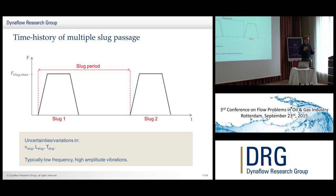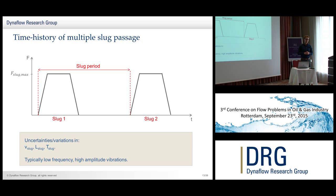If you have multiple slugs through your system and want to do calculations, you need to know something about the period between those slugs. Making this force time history is always a little bit tricky — you have to do some calculation and know a little bit about what is going on in the system. There are a lot of uncertainties: what is the actual velocity of your slug, of your gas, and how large are the slugs? Typically the result is quite low frequency vibrations within the order of 10 Hz, but with relatively high amplitudes. Slug forces can be up to several kilonewtons depending on the diameter.